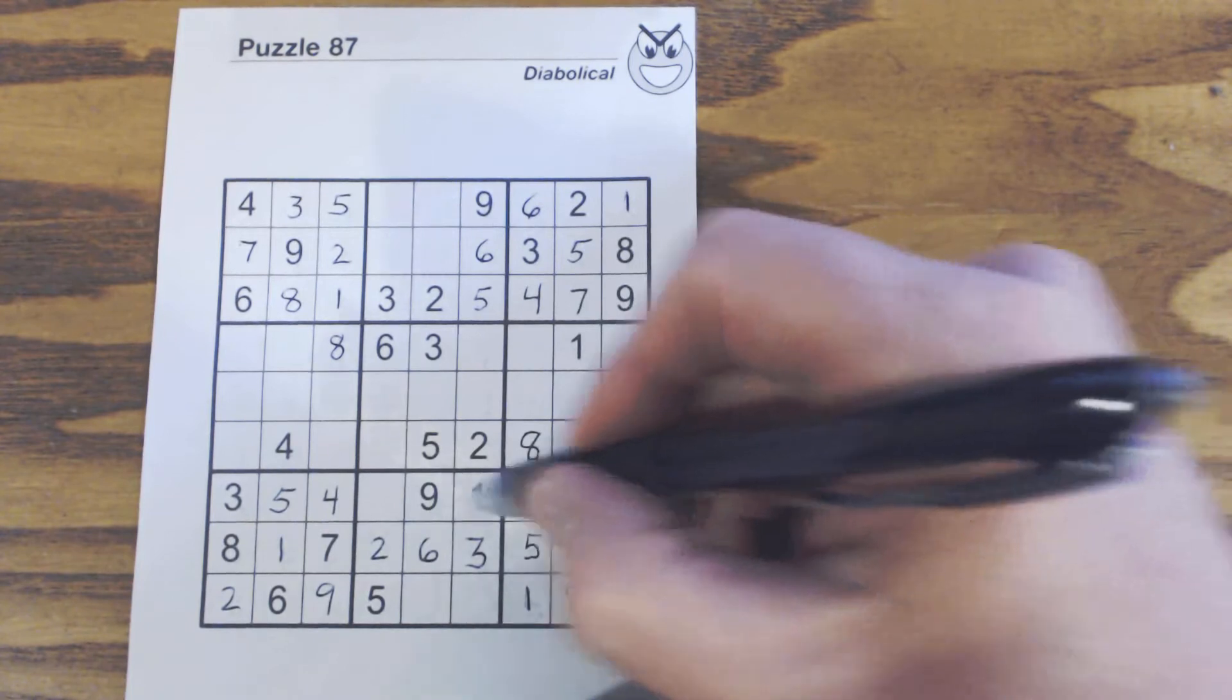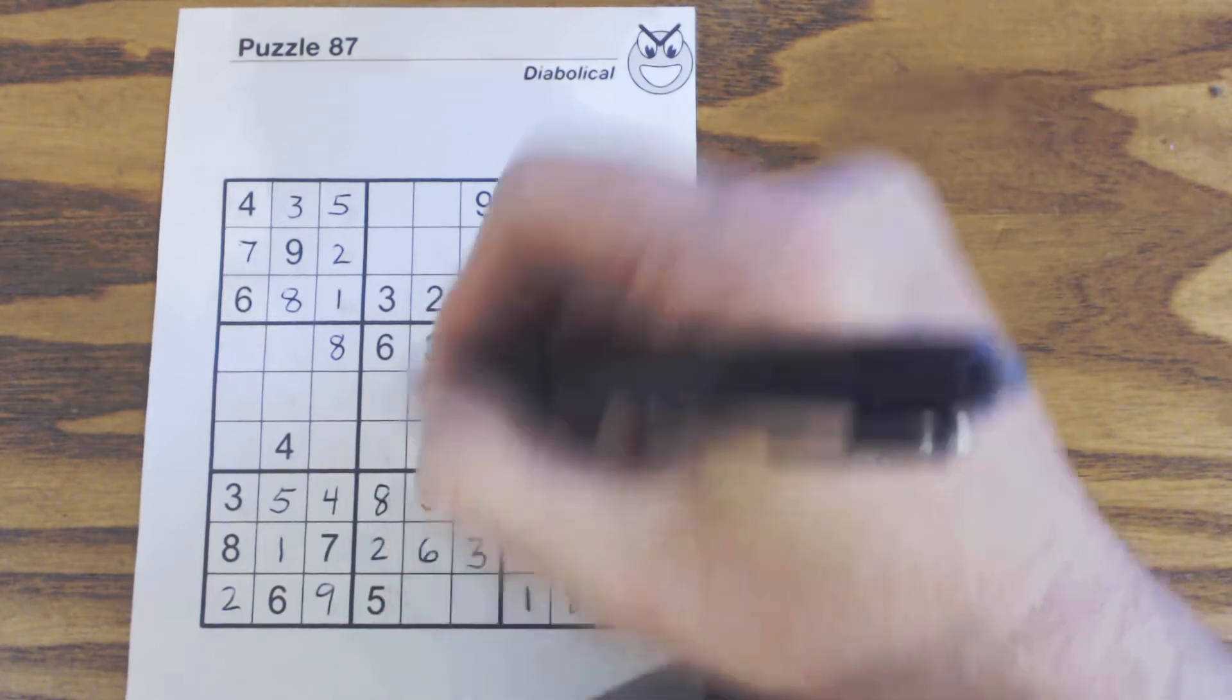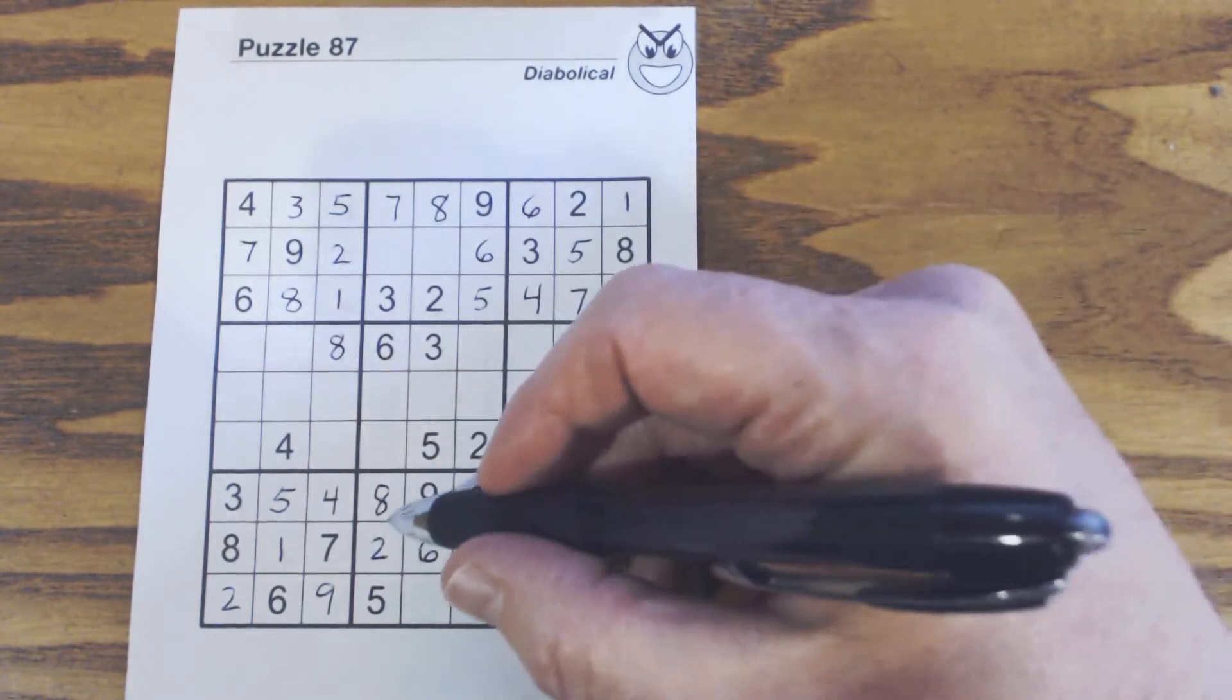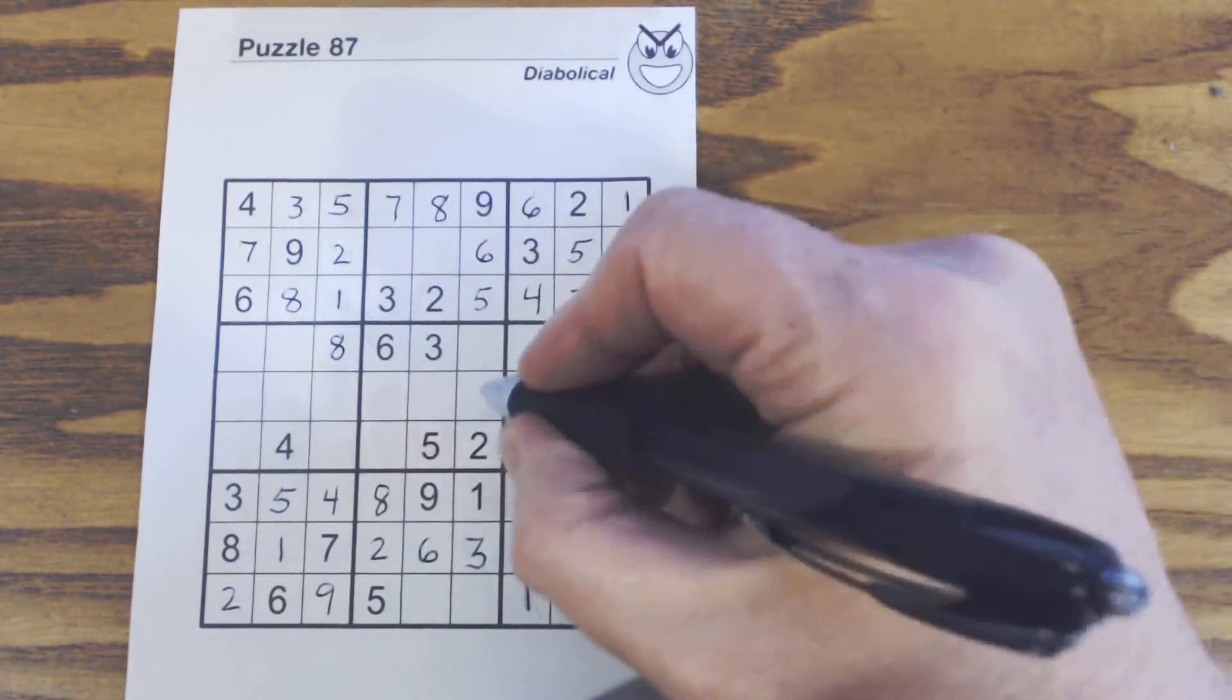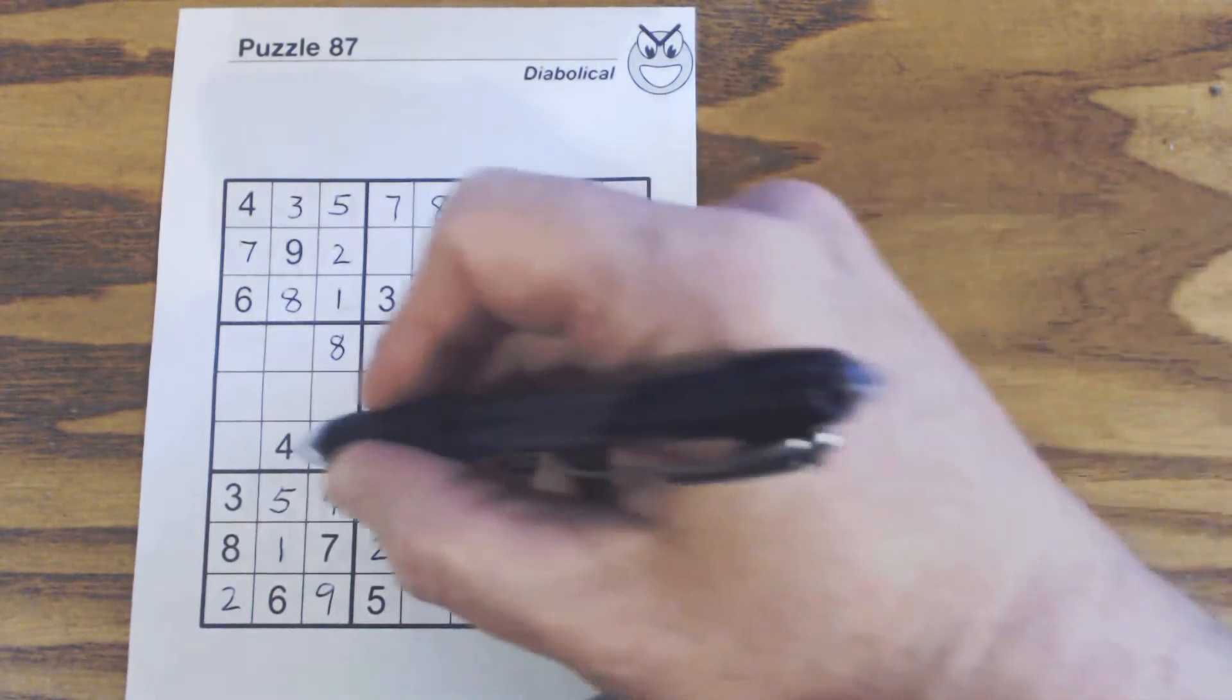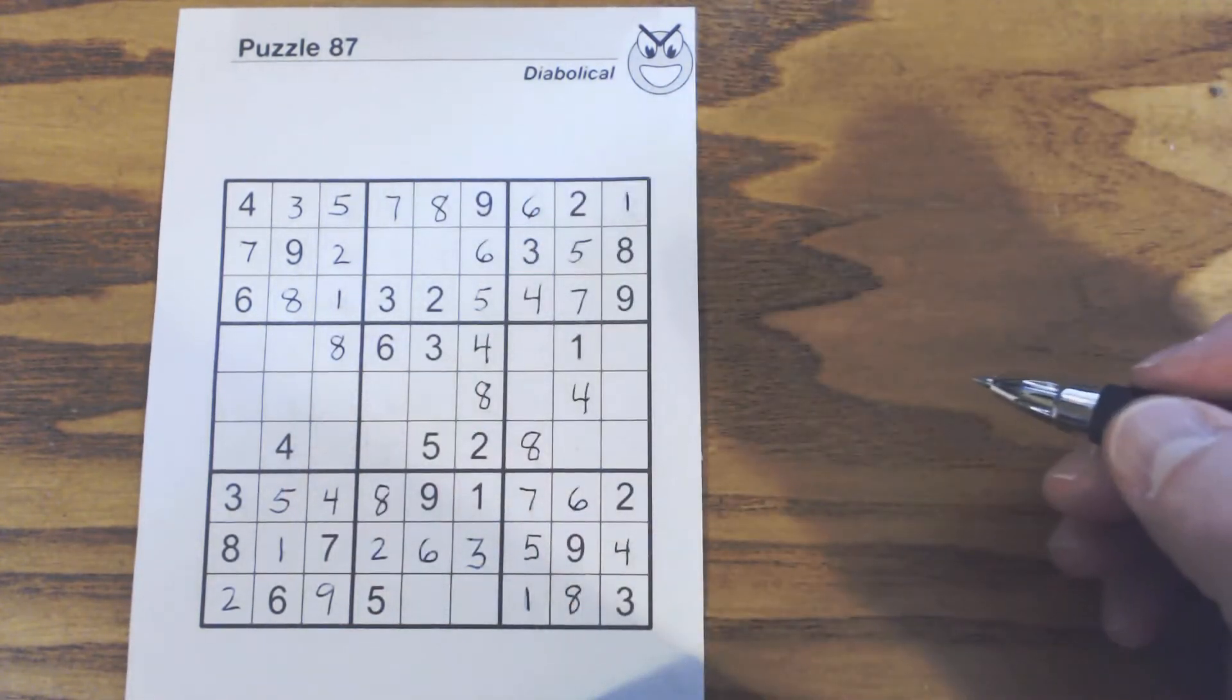Now we know that this is an 8 here because we have 7, 8 twins there, which helps us solve these twins. We can also now fill in an 8 right here, we got 8, 8, 8, 8, so that's an 8. And we've got 4, 4, 4, so this is a 4, and we got 4, 4, 4, so we know that's a 4.